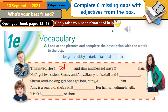Ned's got two sisters, Stacey and Amy. Stacey is also tall and slim — she's a good-looking girl with long, curly, dark hair. Amy is a year younger; she's a bit chubby and her hair is medium length — it isn't long or short. Now please pause the video, fill in the gaps, then come back to check your answers.